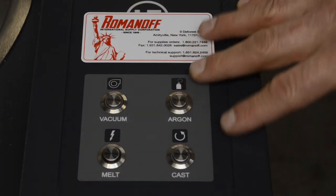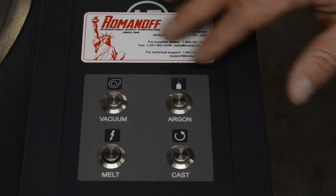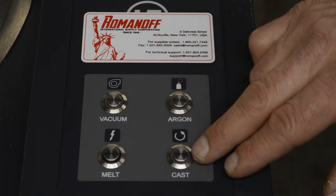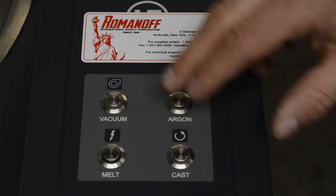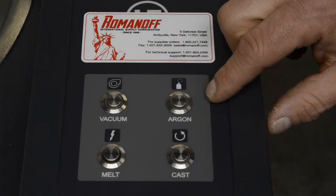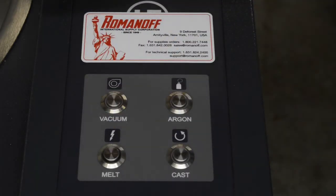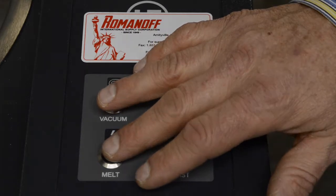At the bottom part of the control panel, we have four different settings here. We have melt, which actually starts the melting. We have casting when you're ready to cast. We have vacuum, and we have argon. So let's start with these two. We're going to first load the metal, load the flask, close the cover, and we're going to press melt.